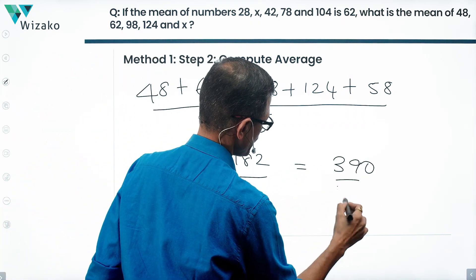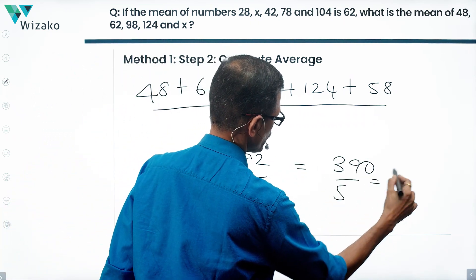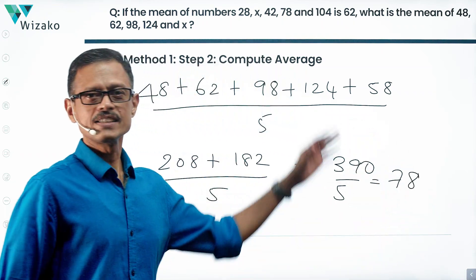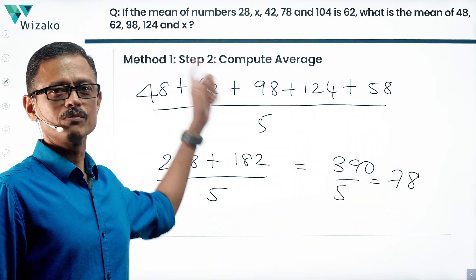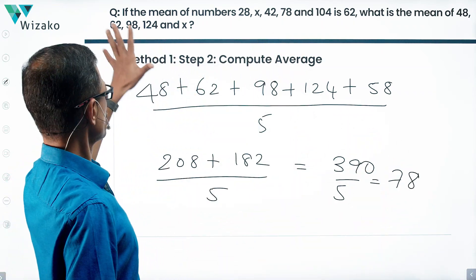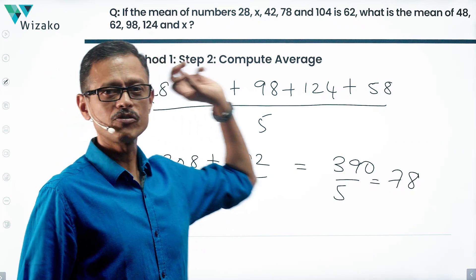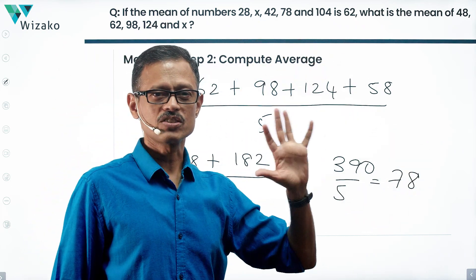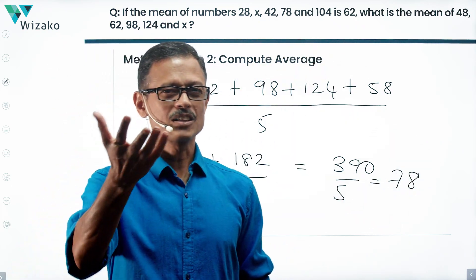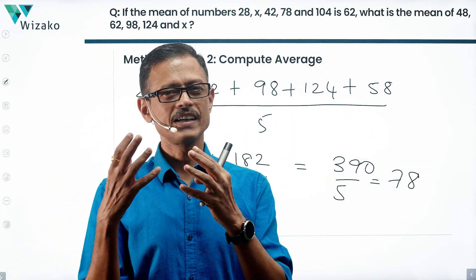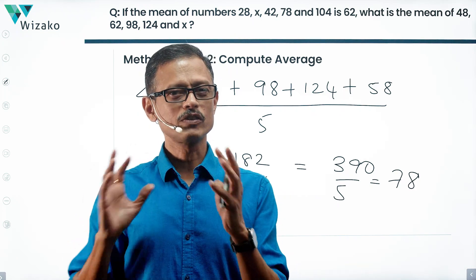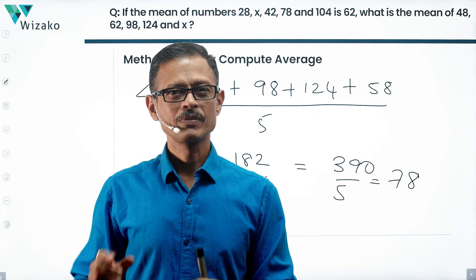390 divided by 5 is equal to 78. So the average of these five numbers — 48, 62, 98, 124 and x — is equal to 78. That's the answer. Should take about 45 seconds to a minute. A bit of calculation, but not very difficult.